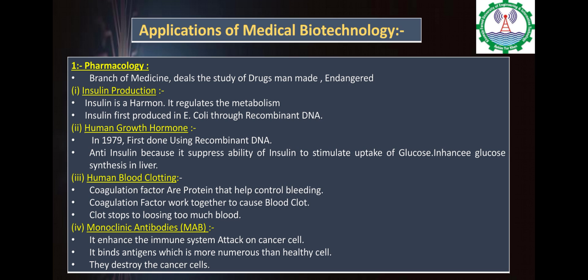Number 3: Human Blood Clotting. Blood clotting occurs when we are injured. The blood contains many proteins and clotting factors. Blood clotting factors cause the blood to clot. Number 4: Monoclonal Antibodies (MAB). These can attack cancer cells and attach to antigens, allowing cancer cells to be destroyed.